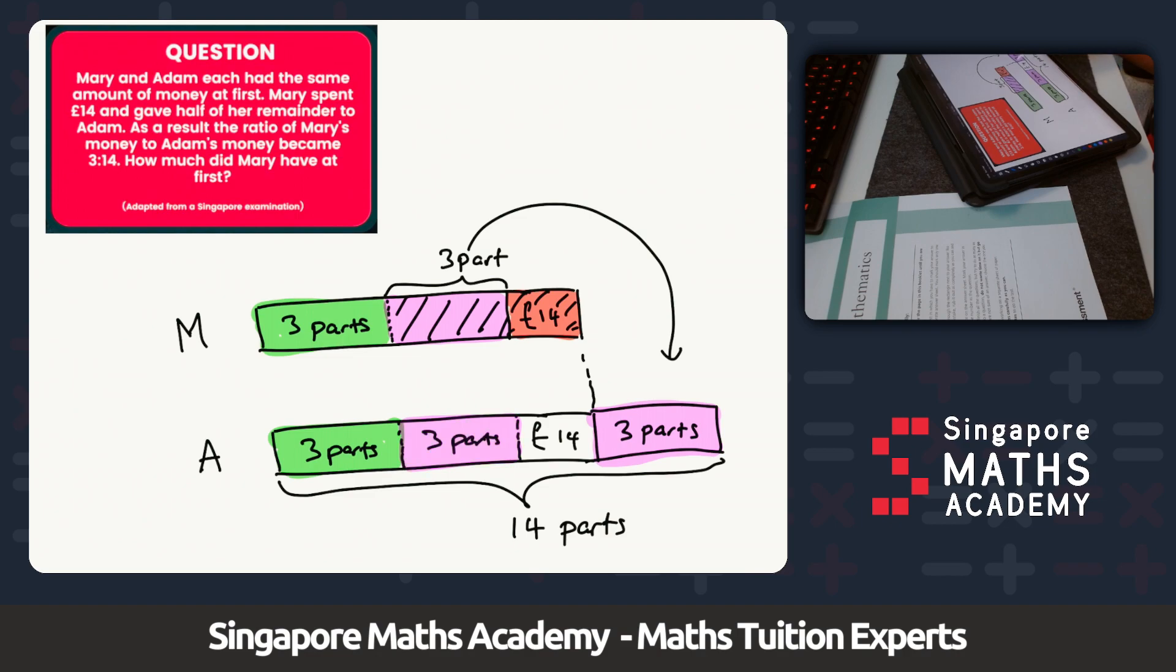In terms of Adam's bar, we've already got three parts here, three parts next to that, and three parts at the end. That's three, six, nine parts altogether, and I know he's got 14 parts in all.